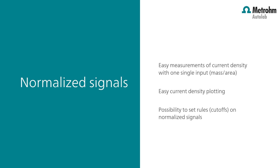Normalized signals are very important in electrochemistry because the current which is measured is proportional to the size or mass of your working electrode. It is easier to compare data with different groups and publications when they are using different working electrode areas and plot the data with respect to current density. The current density is the current divided by the area or mass of the working electrode.